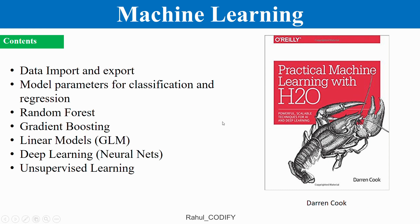Once you have basic knowledge of machine learning, you can go for more detail with 'Practical Machine Learning with H2O' by Darren Cook. It gives a more detailed journey through machine learning concepts using the H2O package developed by the H2O team — you can find more at h2o.ai. It includes data import and export, model parameters for classification and regression, separate chapters on random forest, gradient boosting, linear models, GLM, deep learning, unsupervised learning, and hyperparameter search.